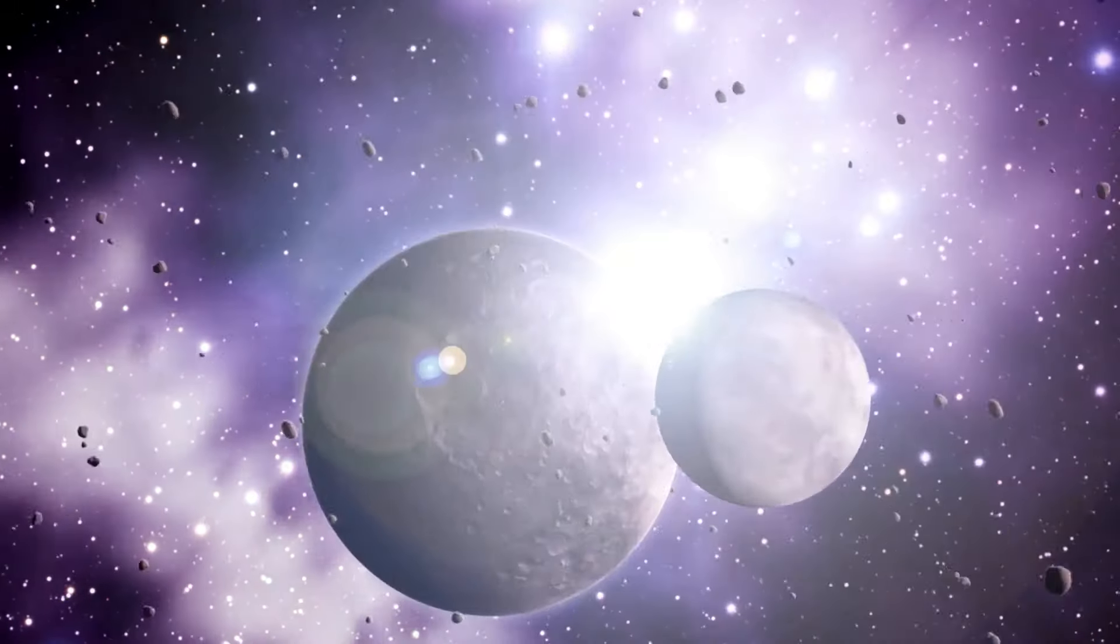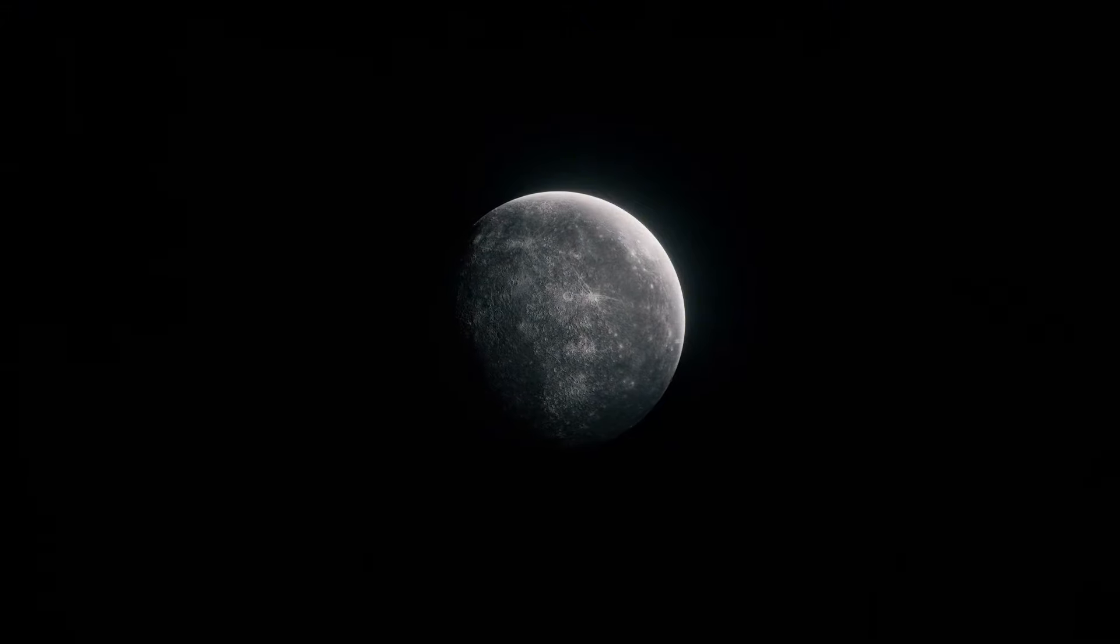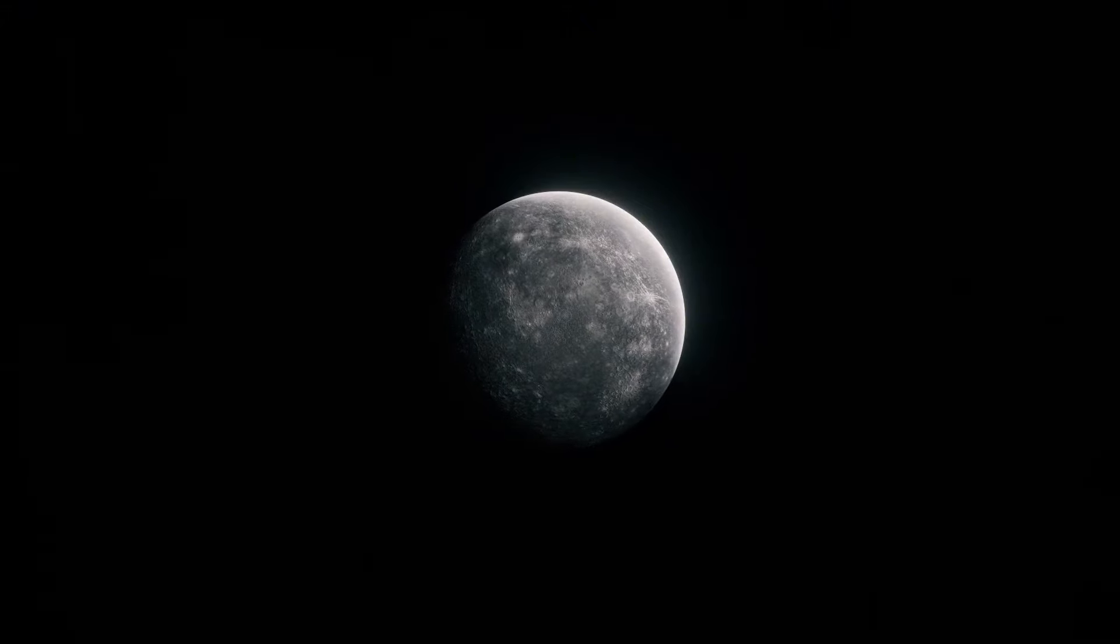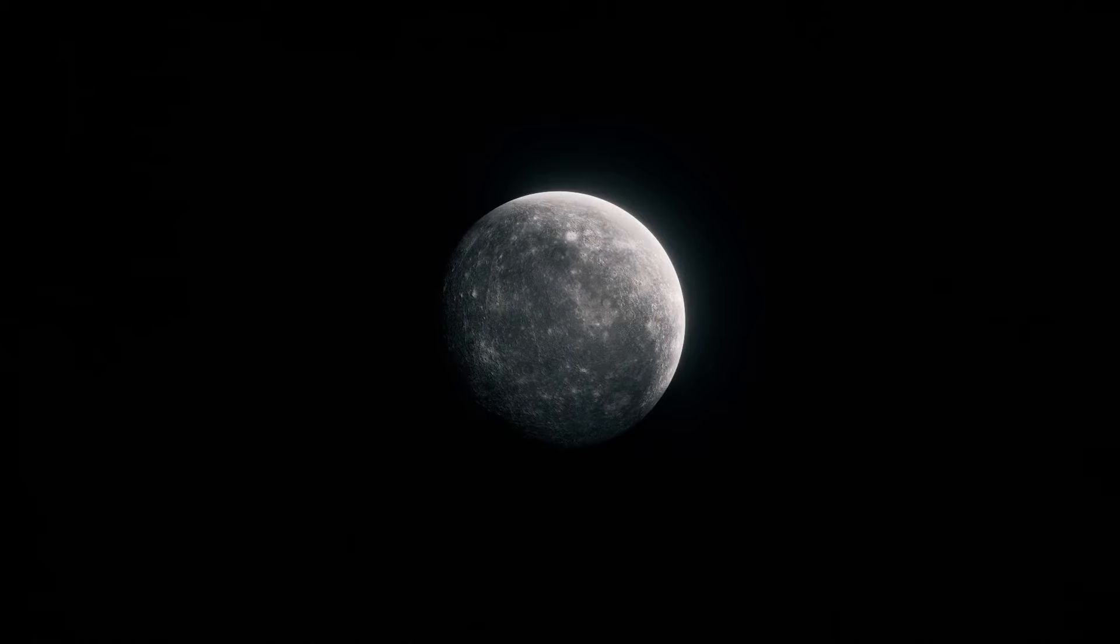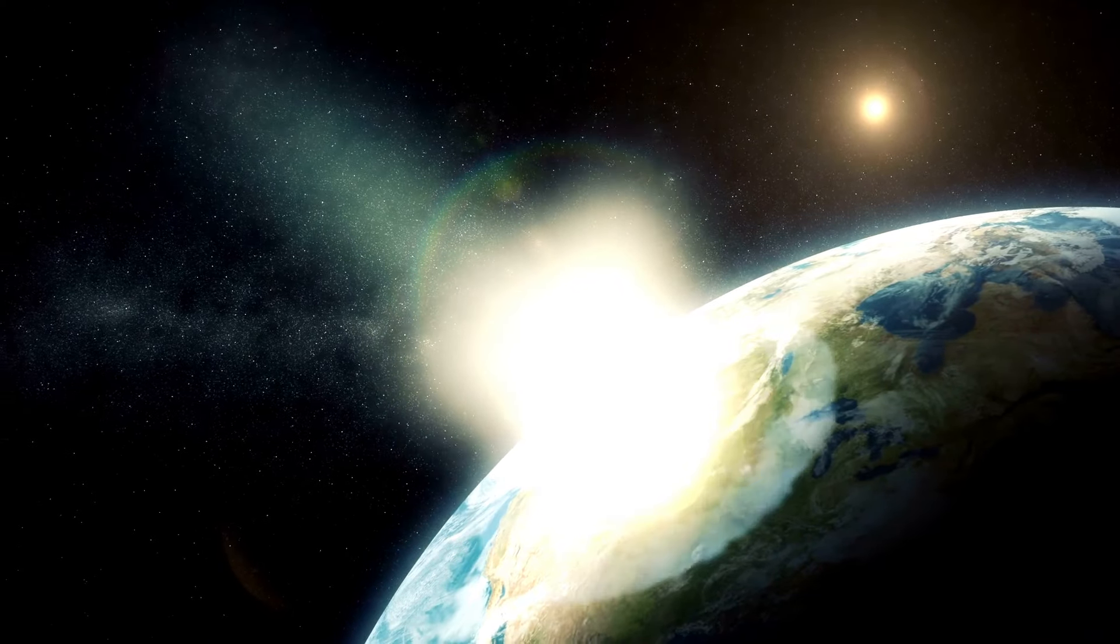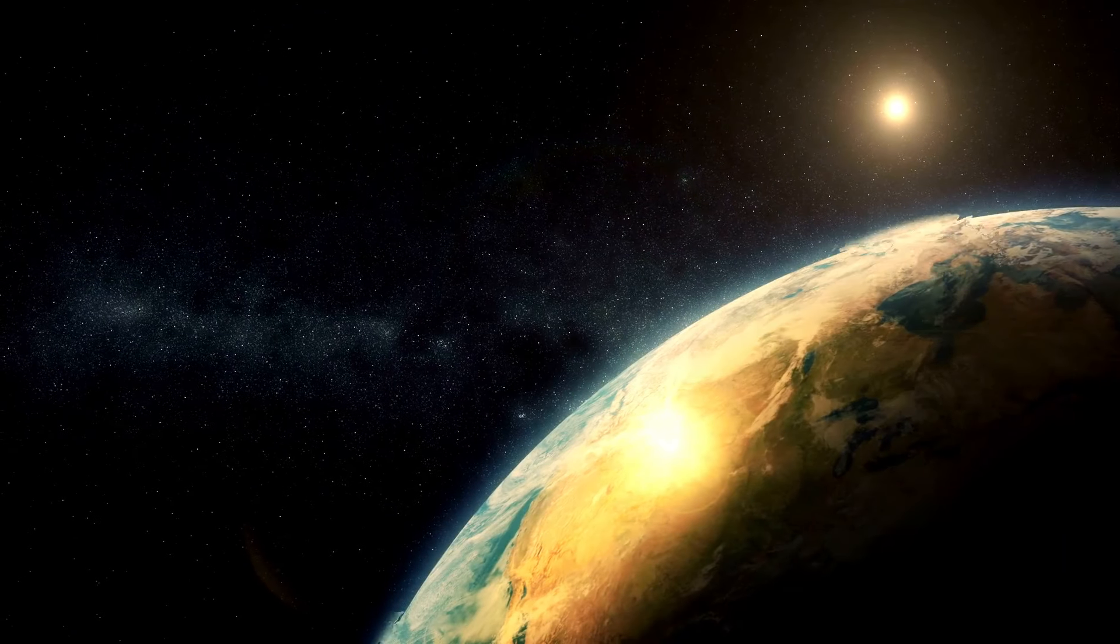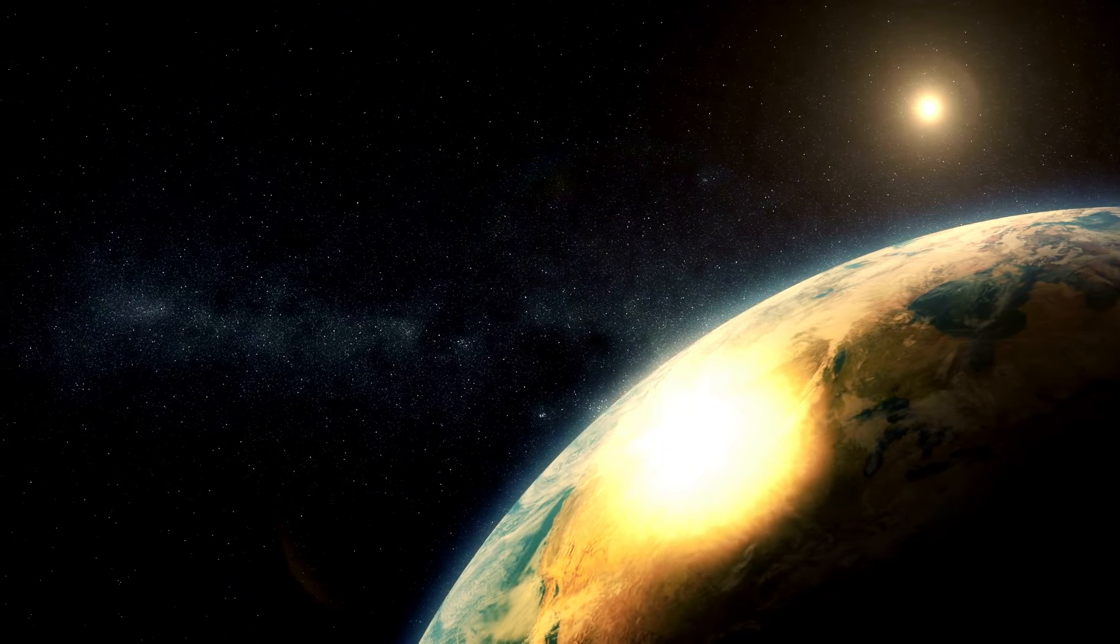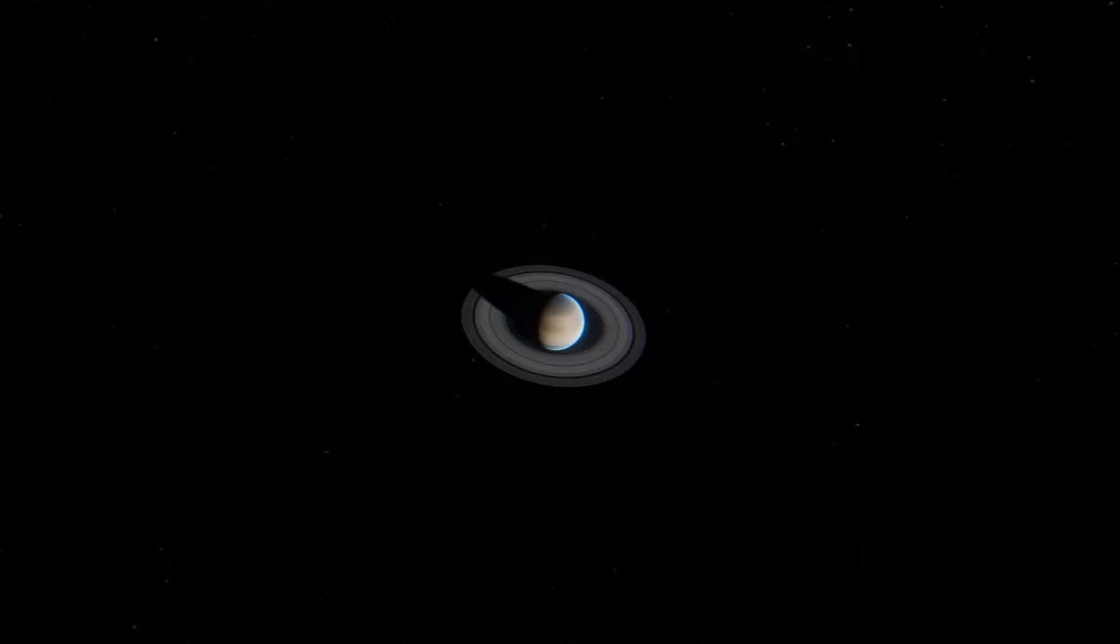One of the most intriguing aspects of Pluto's orbit is its intersection with Neptune's path. For about 20 years in each orbit, Pluto actually comes closer to the Sun than Neptune, defying what we might expect from their positions in the solar system. This leads to the natural question: why hasn't Pluto collided with Neptune?